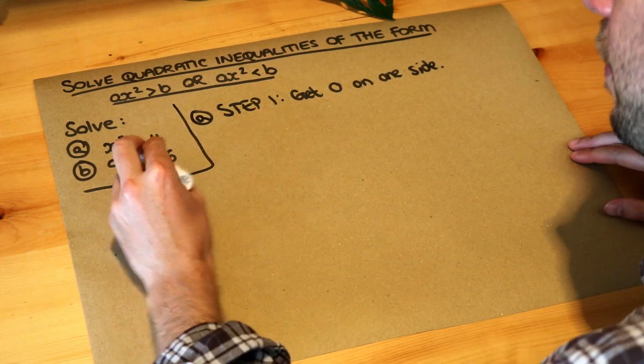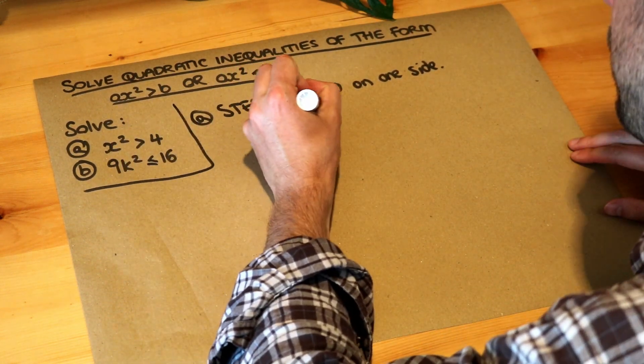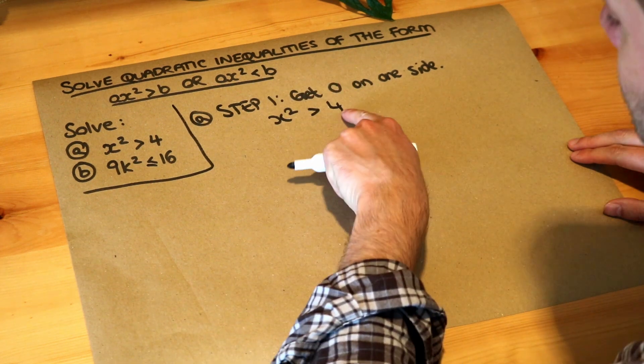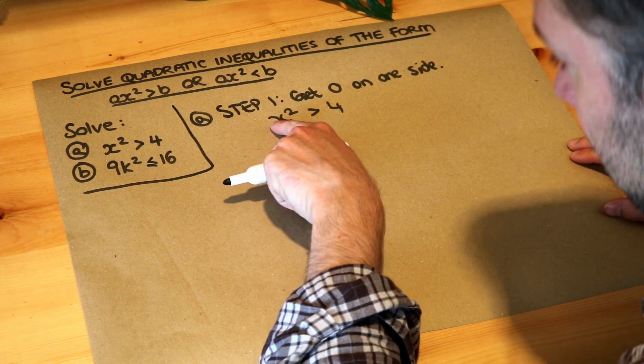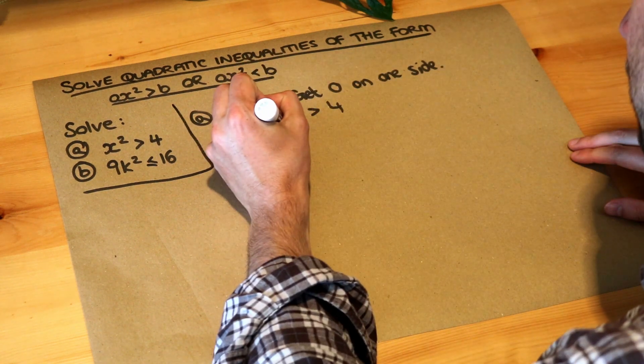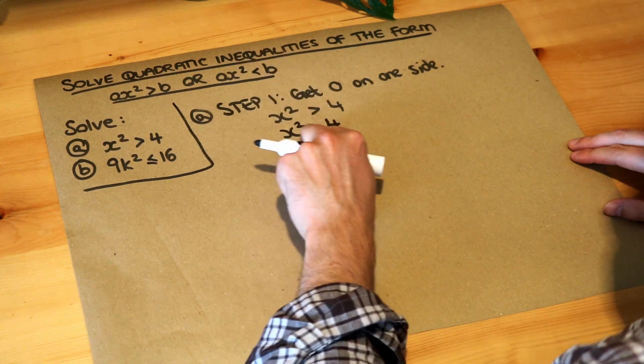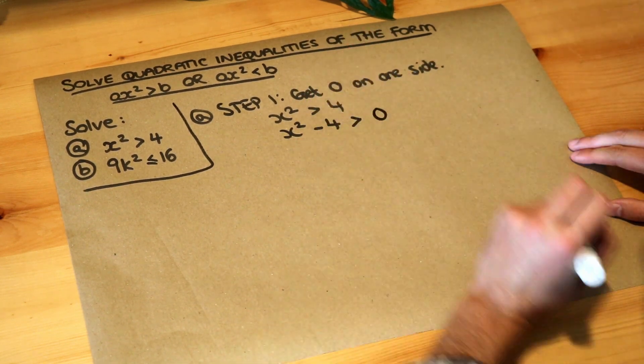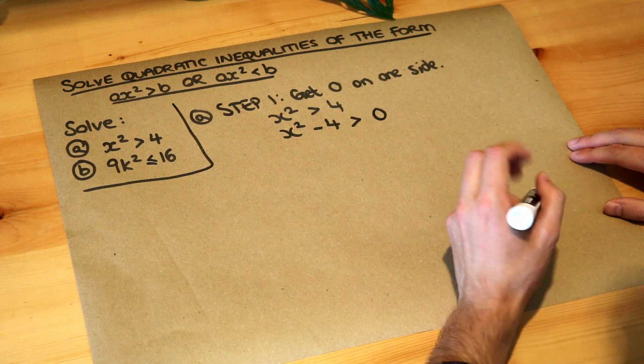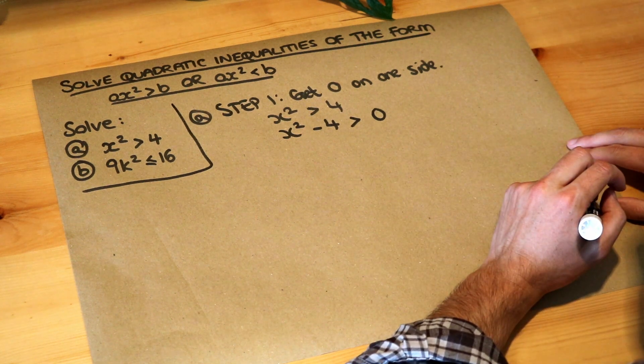So for this first part, if we've got x squared is greater than 4, we want everything on the side where x squared is positive, which is the left. So we're going to minus 4 from both sides and we get x squared minus 4 is greater than zero. We've just moved the 4 to the left by subtracting 4 from both sides of the inequality.